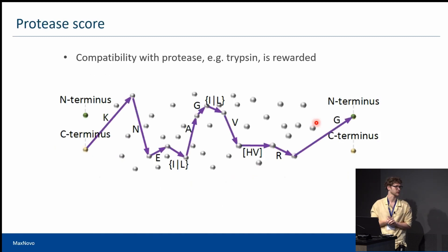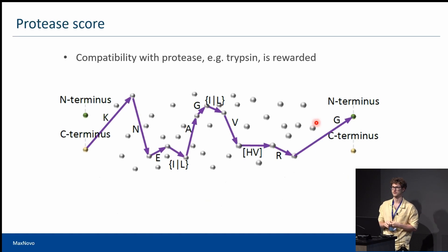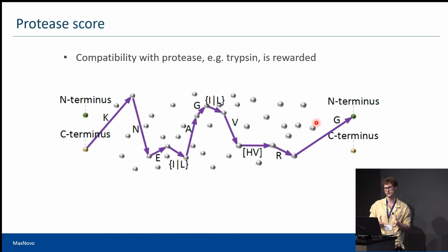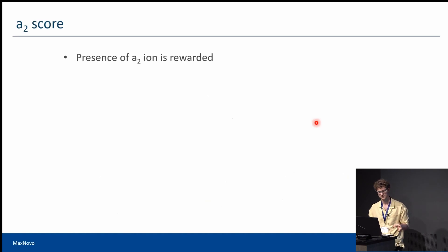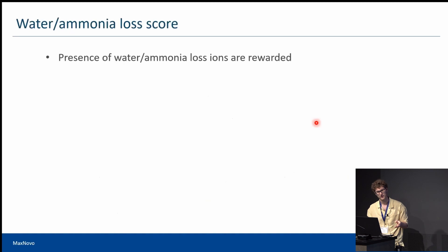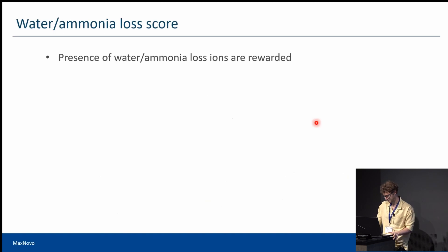The protease score checks if our sequence ends are compatible with the protease we used. The A2 score checks for the presence of A2 ions in the spectrum and rewards them. The water/ammonia loss score also rewards the presence of water and ammonia loss ions. And that covers all components of the raw score.